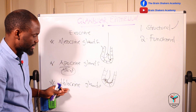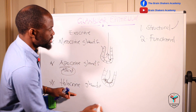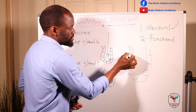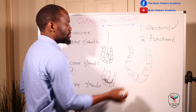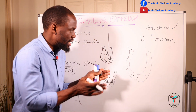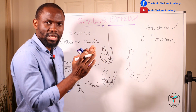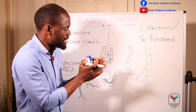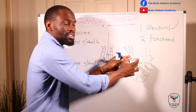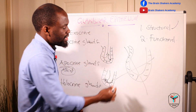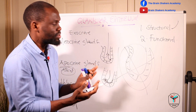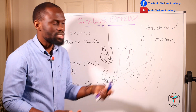For the holocrine glands, the cells produce their secretory product, and once the cell matures and has accumulated the relevant amounts of secretory product and its constituents, the cell bursts and becomes the secretory product itself. The nearby cells then undergo mitosis to cover the space left behind, and the process repeats itself.